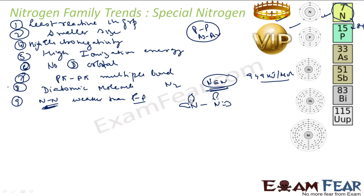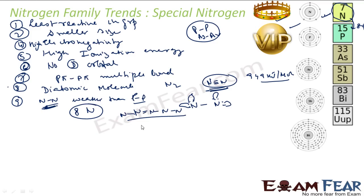Because of this repulsion, the bonds are not strong, and because of this, the catenation property in Nitrogen is less. Nitrogen is known to form a chain of at most 8 Nitrogen atoms. So there is no or very less catenation in Nitrogen.